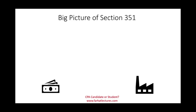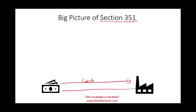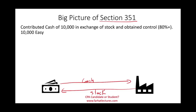Welcome to this session on Section 351 — corporate formation and what happens to initial contributions of cash or property. In a simple example, if you want to start a business, you can transfer cash and the business issues common stock showing ownership. Assuming you contributed $10,000 cash in exchange for stocks, you obtain control, meaning you own 80% or more of the company's stock. There are no tax consequences to that transaction.